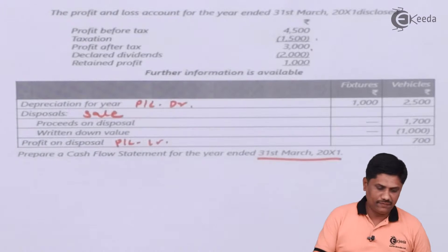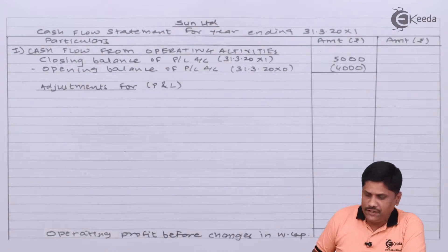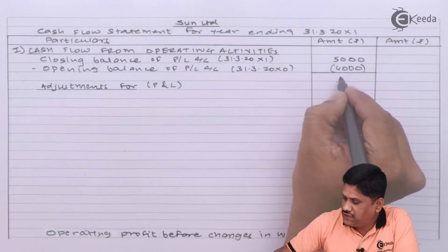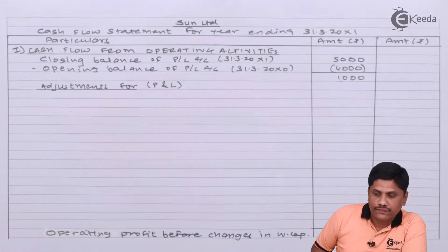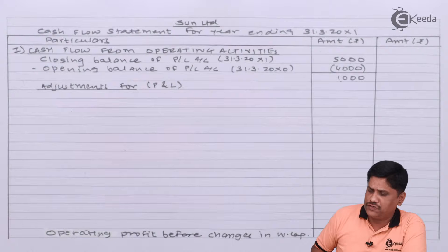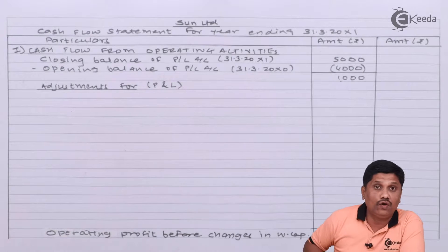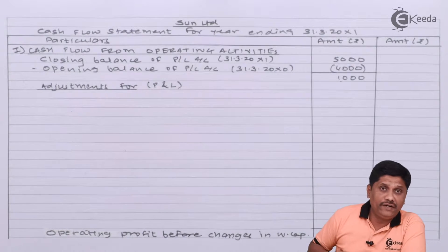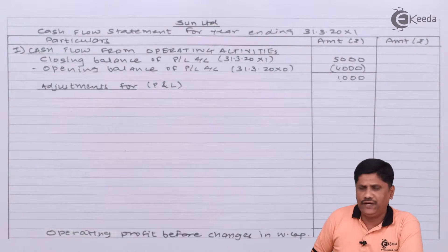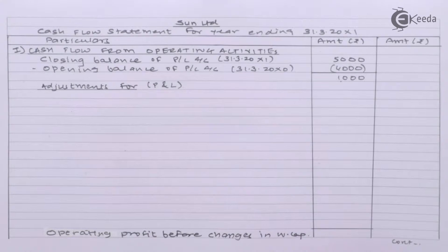Let us prepare the cash flow statement. I have set up the format with sufficient space for every activity. Closing balance of P&L account minus opening balance of P&L account gives a net change of Rs. 1,000. This is a more-or-less permanent format we will use in almost every question. Thereafter, we will make adjustments in the P&L account for all non-cash and non-operating activities.